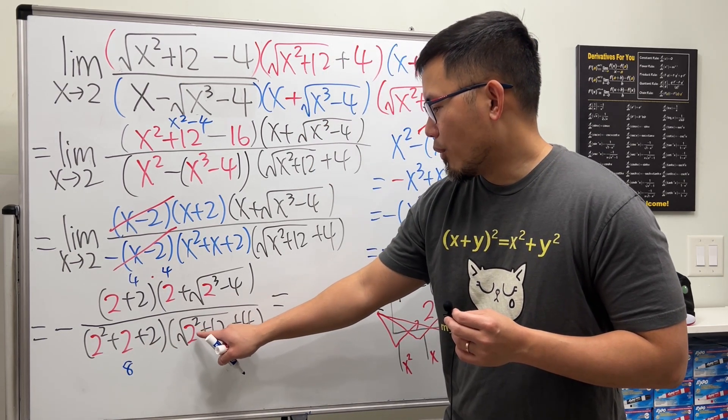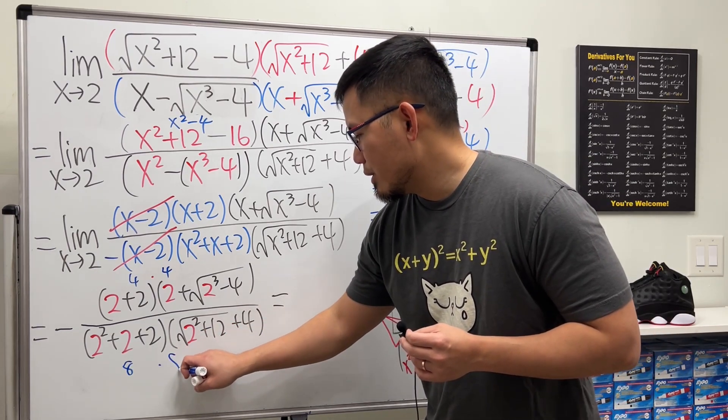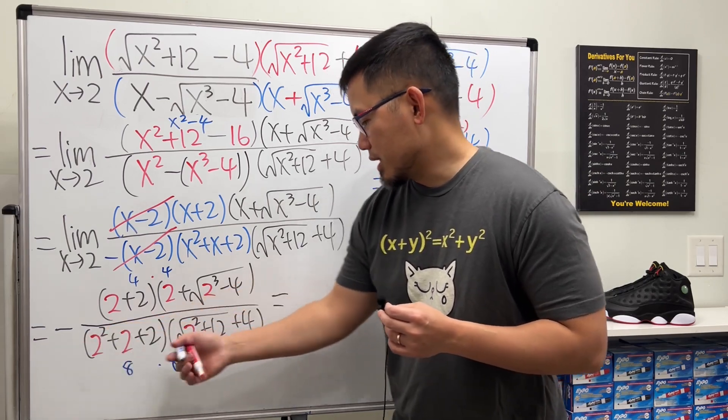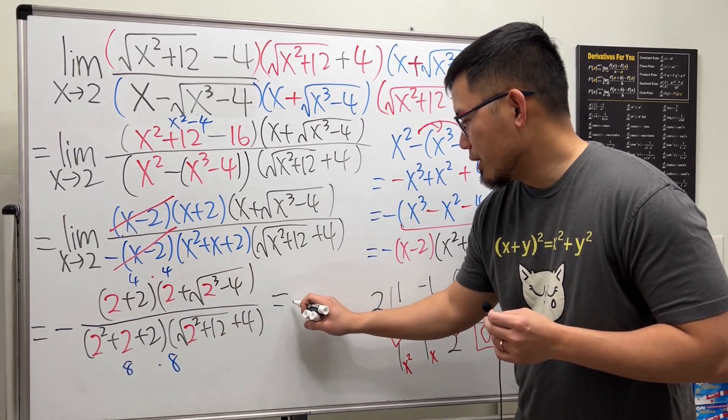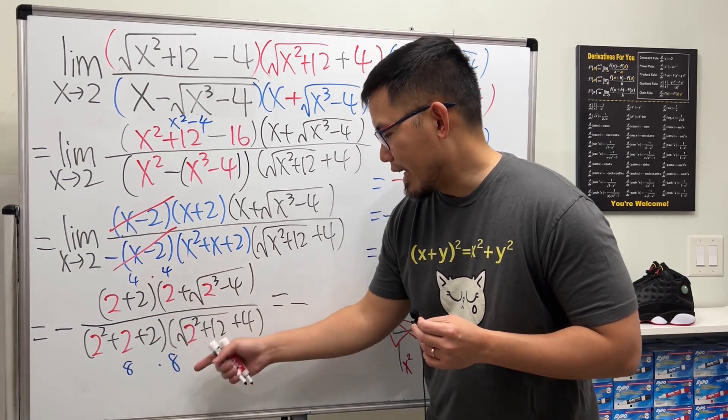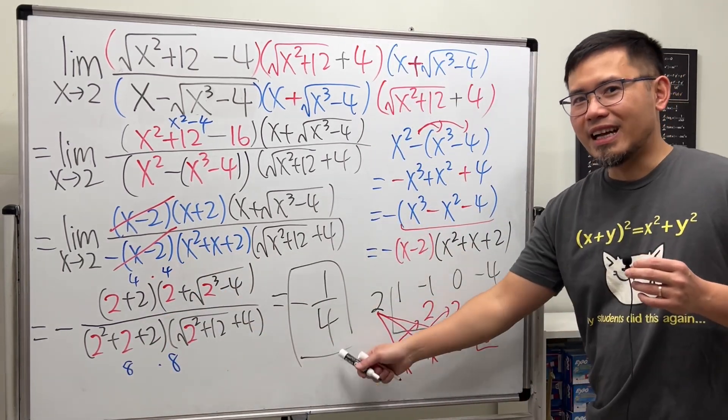This right here is 4, 16, square root of 16 is 4, and then that's 8. Oh, quite interesting. It's like 4 times 4 over 8 times 8. That's negative. All in all though, you get negative. You can reduce, right? This is 1 half, 1 half, this is 1 half, 1 half times 1 half, negative 1 over 4. Done.